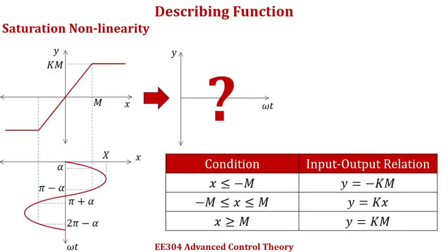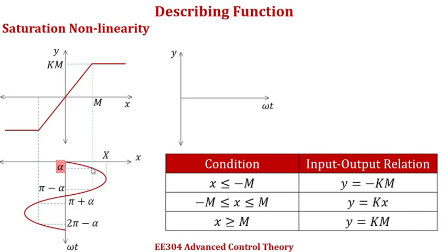In the previous lecture, we saw that the input to the nonlinear function is a sinusoidal signal, and as such you will get an alternating quantity as the output. If such an input is given, what will be the output? For the region from 0 to alpha — alpha being the angle corresponding to the corner in the input-output characteristic — the value of the sinusoidal signal is less than m, and as such the output will be proportional to the input, that is y is equal to kx.